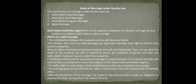The wife's right to claim dower is fully established just after the completion of marriage. Whether the marriage is dissolved by divorce or by the death of the husband, the wife becomes fully entitled to claim dower. A valid marriage also gives the wife the right to maintenance from the husband with immediate effect — immediately after marriage, she becomes entitled to maintenance.